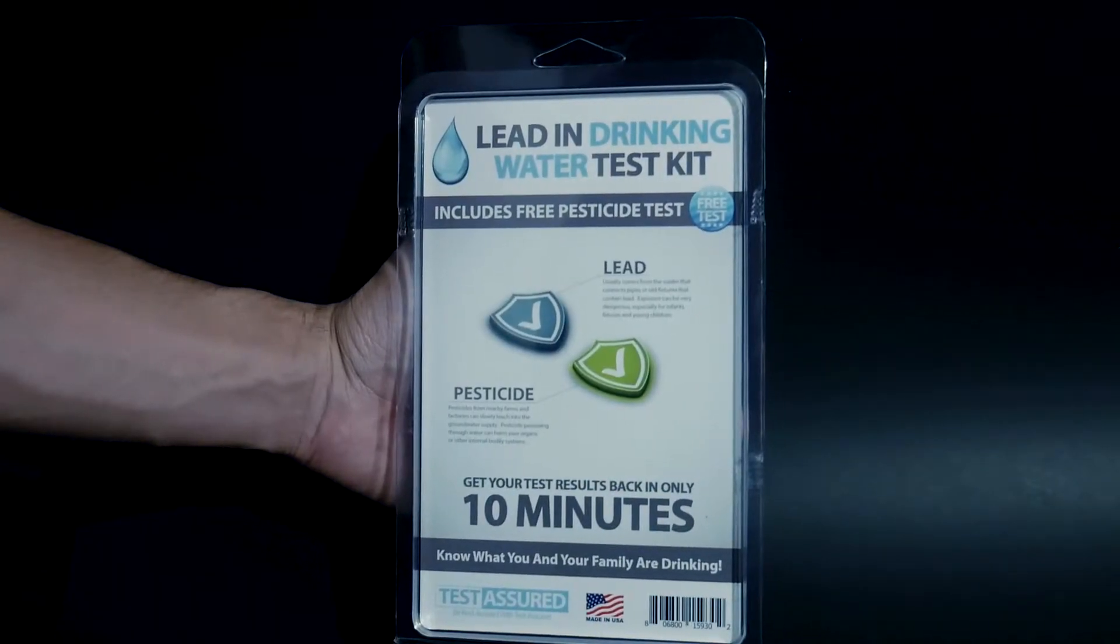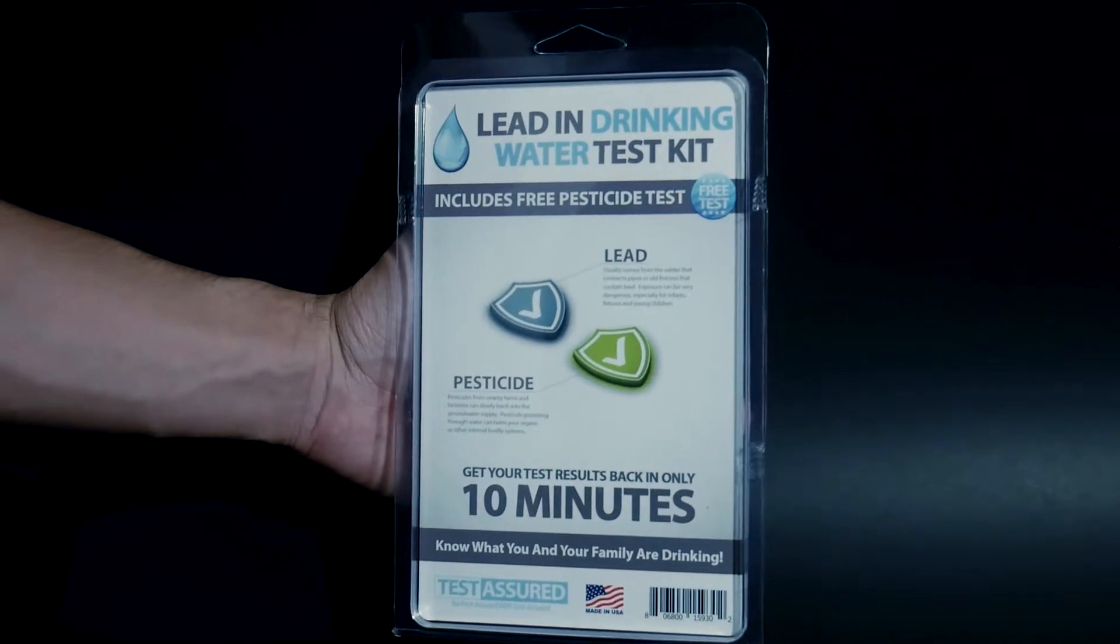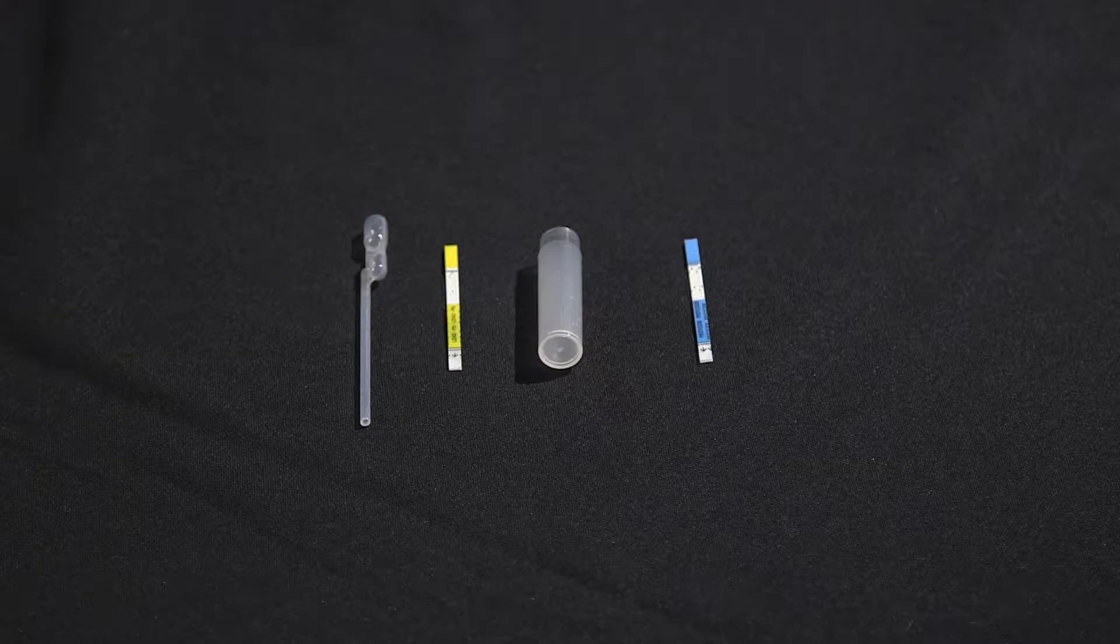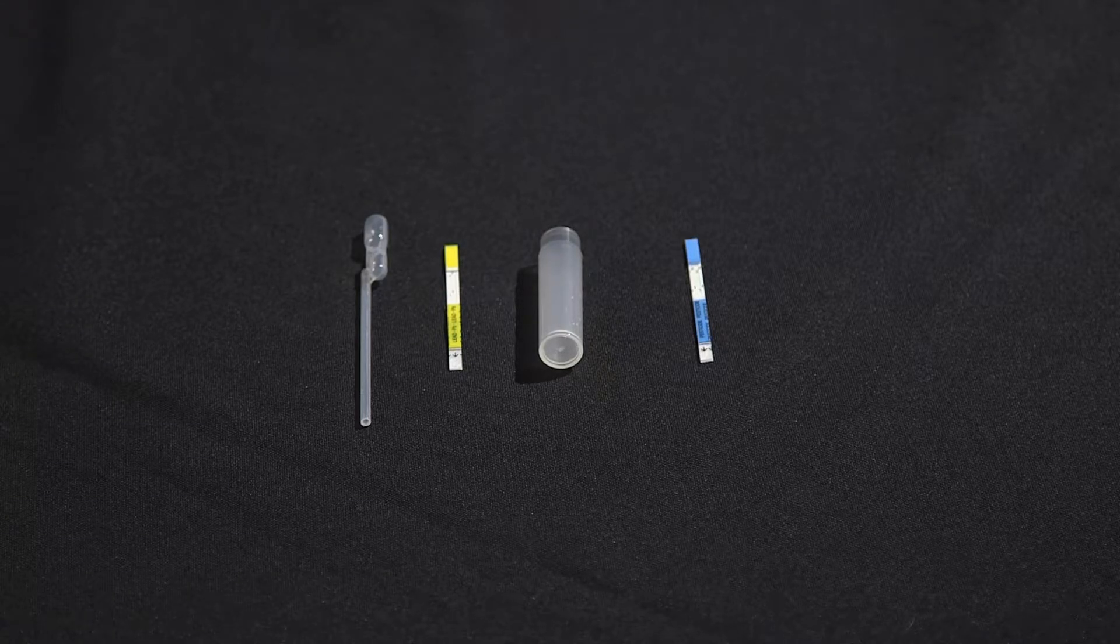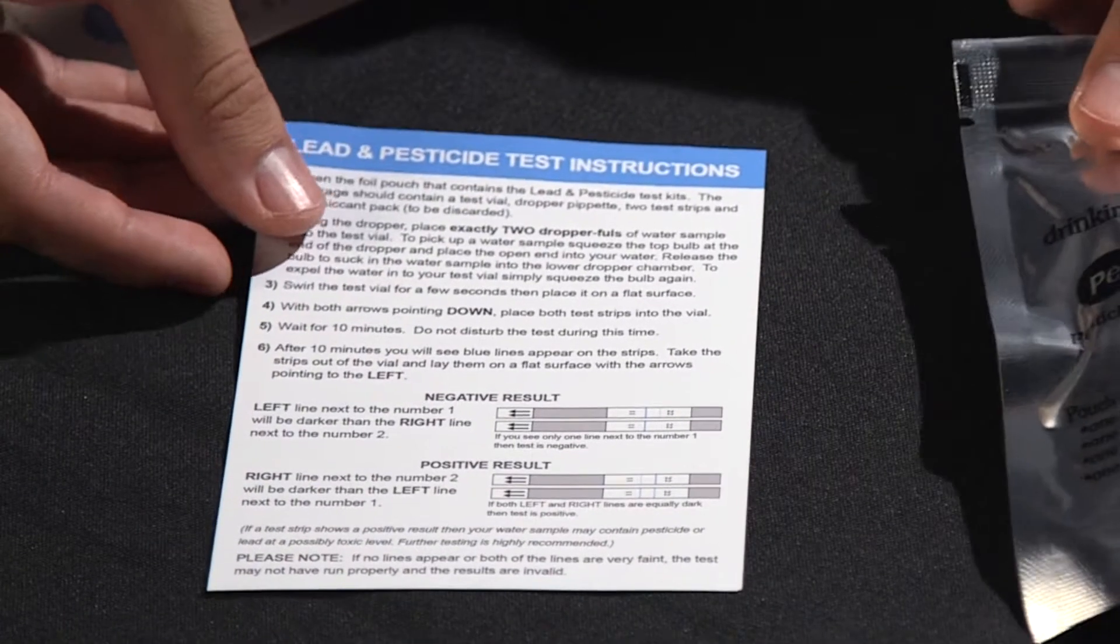For this test, we'll only need six items from your water test analysis kit: a water container, one pesticide test strip, one lead test strip, a test vial, a dropper pipe, and the sheet of paper containing the test result charts.